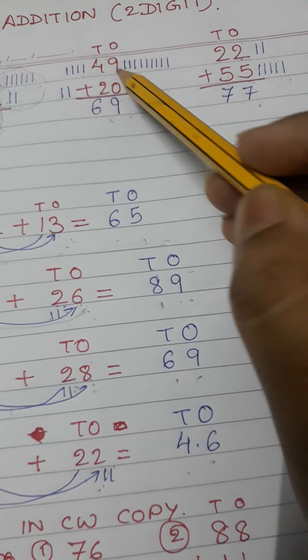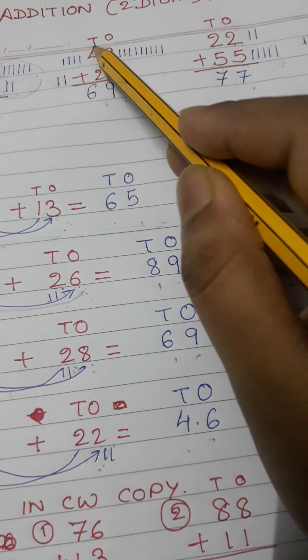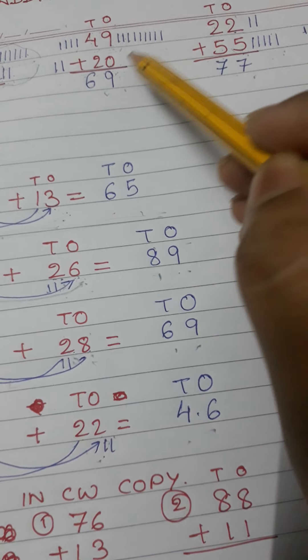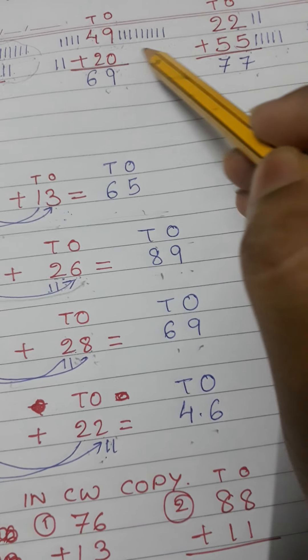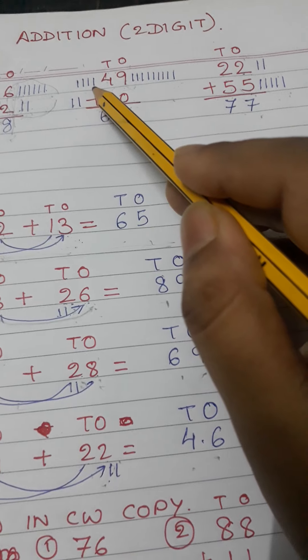49 plus 20. Ones place, tens place. In ones place I have nine and zero. Nine means nine sticks, zero means no stick, nothing. So how many total I have? Only nine. My answer is nine. Four sticks, two sticks, so four plus two makes six.